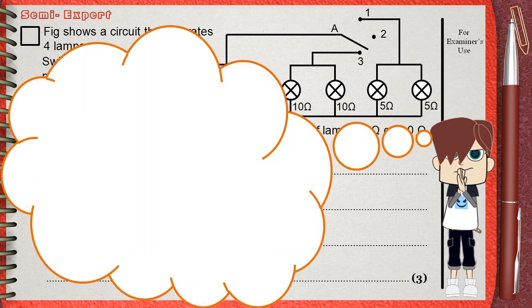The equations of power are P equals IV, P equals V square over R, and P equals I square R.